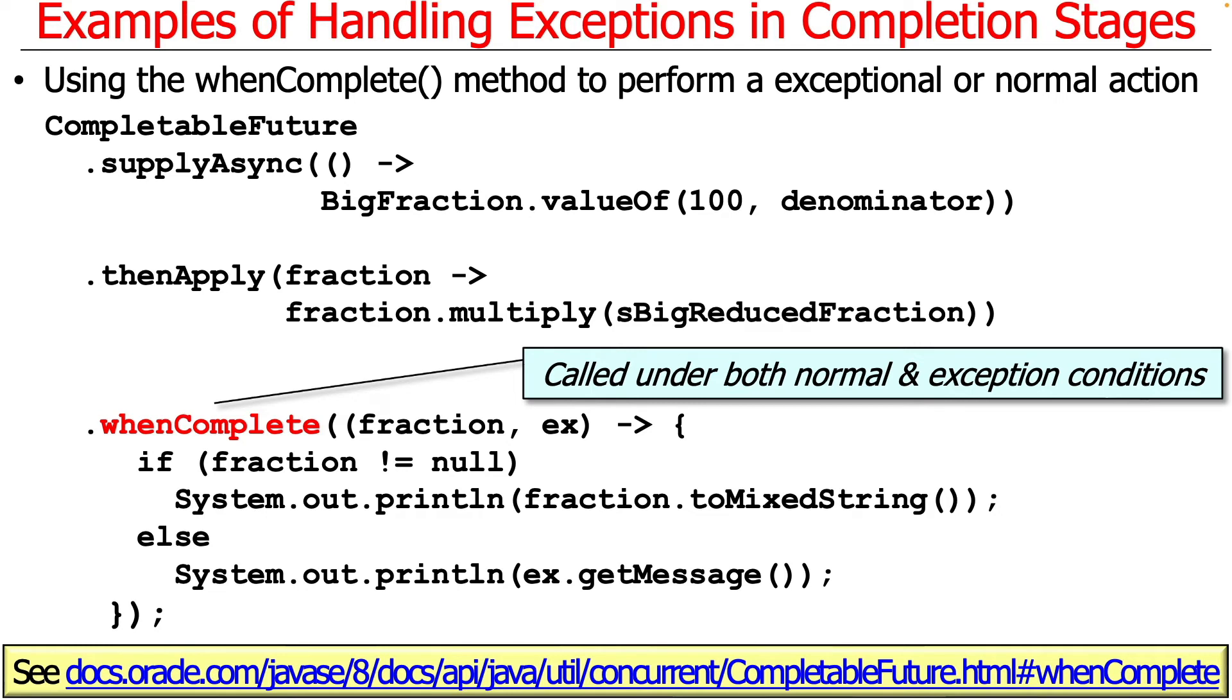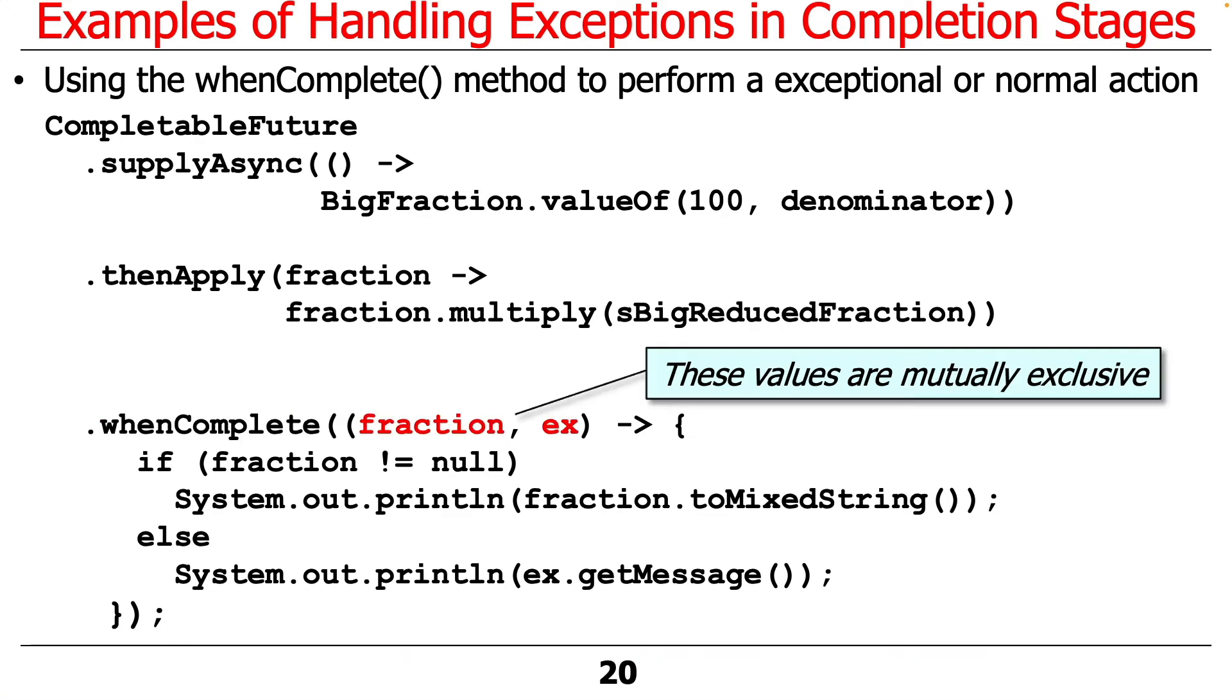The third and final technique here we're going to look at is whenComplete. It's a little different than the other ones. It has some elements of handle, but not everything. This is called under both normal and exceptional conditions, like handle was. It's passed in two values, either the value if things went well or the exception if they didn't go well. These values are mutually exclusive. One of them will be null. One of them will not be null. They can't both be null. They can't both be non-null.